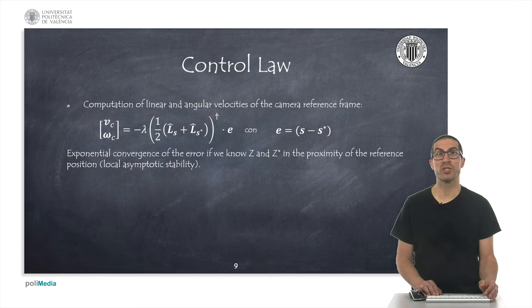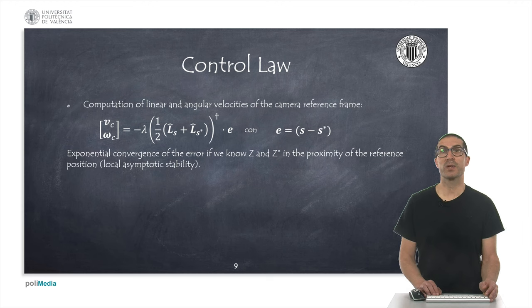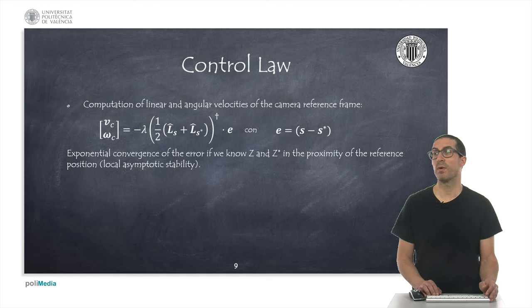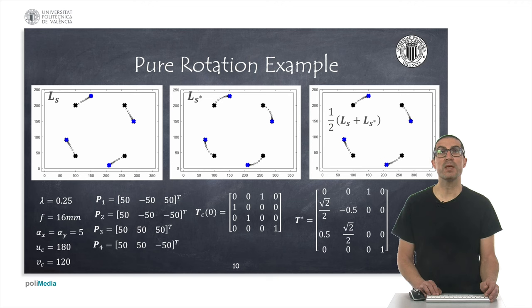Here, we have used a compact notation of the interaction matrices shown before. The actual interaction matrix combines both the observed features and the reference features. But also, the pseudo-inverse could be computed using only the observed or only the reference features.